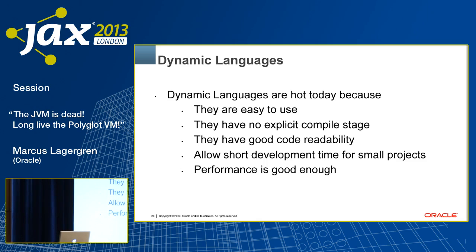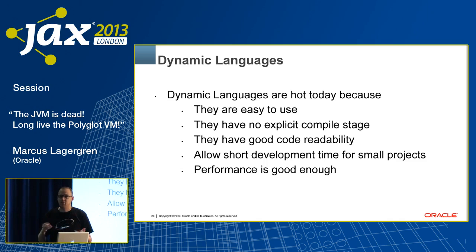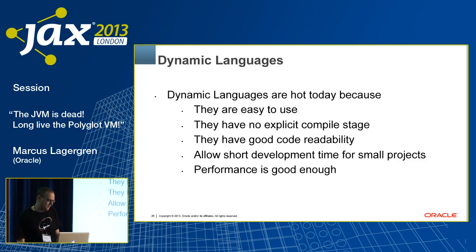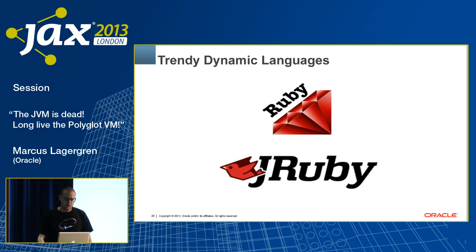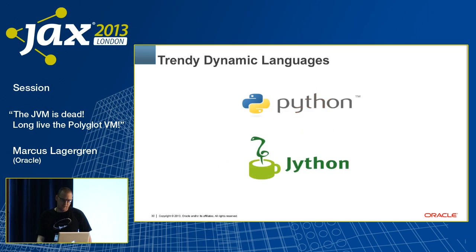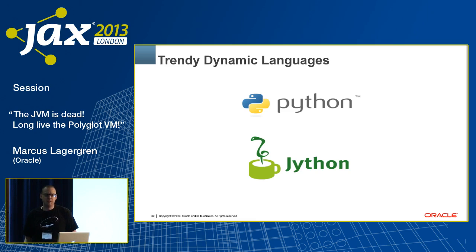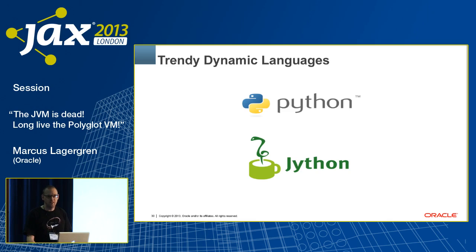More importantly and more recently, performance is starting to get good enough, which is the main reason people are migrating to dynamic languages today. Ruby is very trendy right now, and there's a very good JVM implementation of Ruby — JRuby — which in many cases actually outperforms the native Ruby runtime. Python is very trendy. Jython is the Python implementation on the JVM, and it could use a little more developer love. People seem to be working on PyPy instead, which is really cool but not on the JVM.